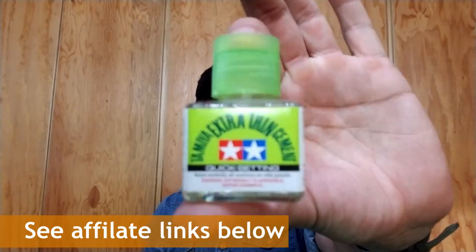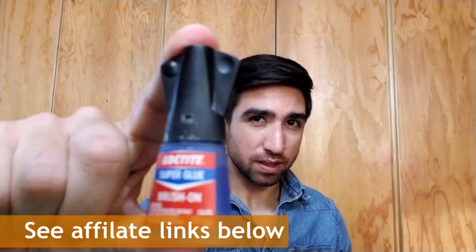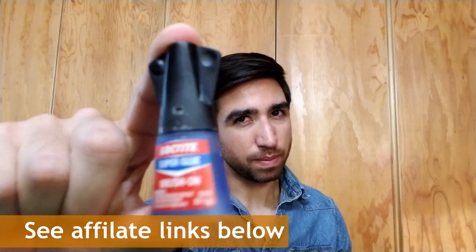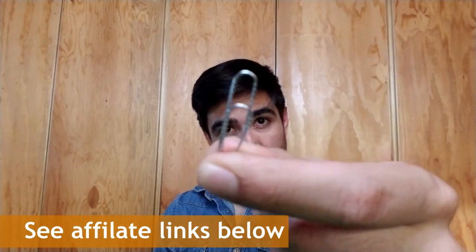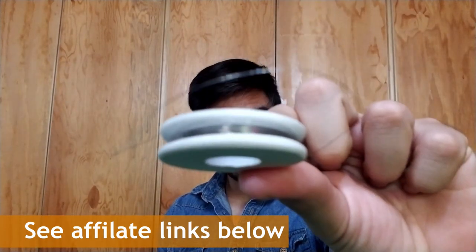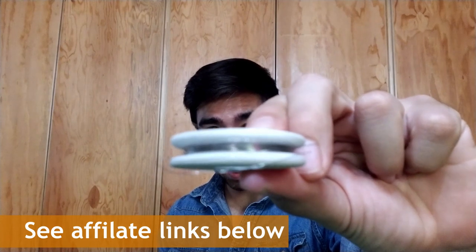Your Tamiya Extra Thin Cement. You could also use Loctite Brush-On Glue. It's a little bit thicker, but it holds a little bit better. Go ahead and get your paper clip. Any plain Jane paper clip will do. Some 0.2 millimeter wire. It's very important that you get 0.2 millimeter for it to look right.